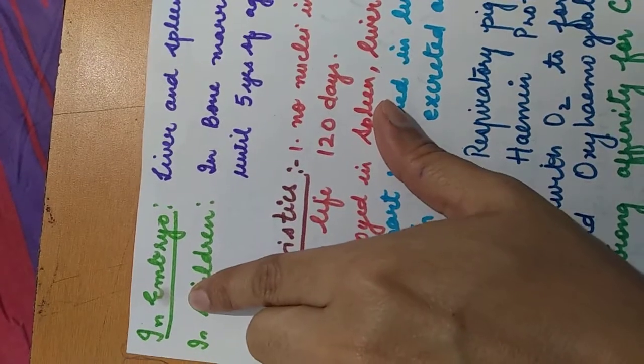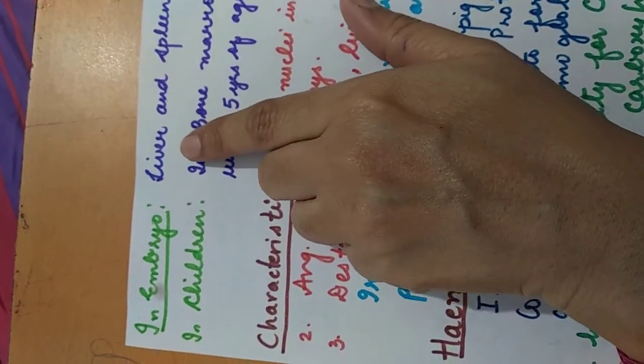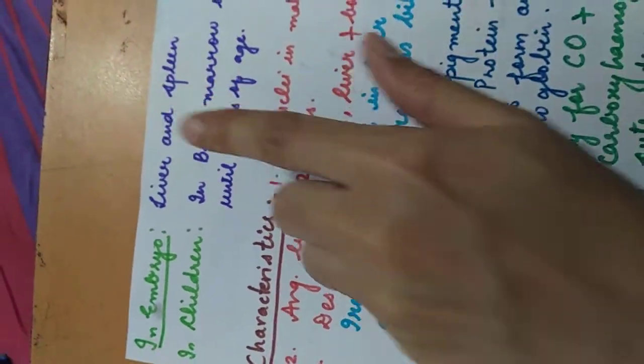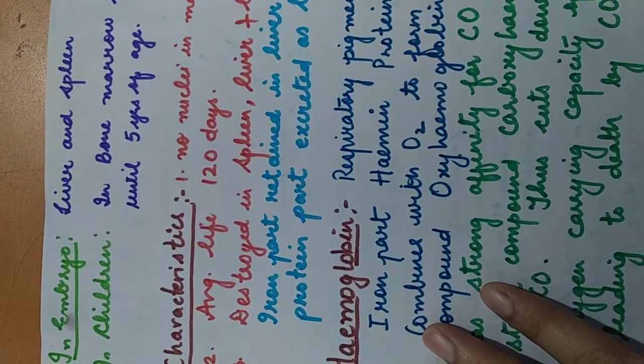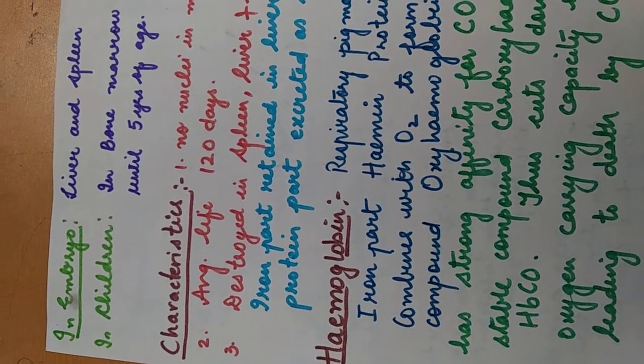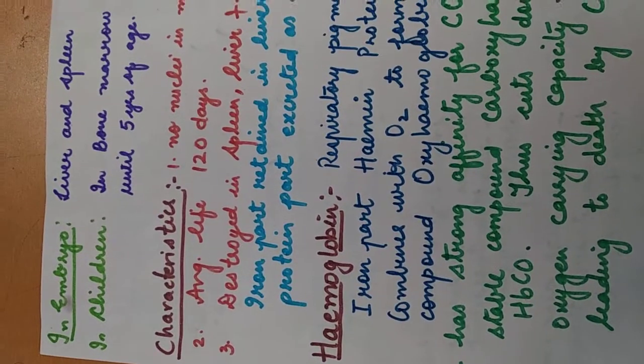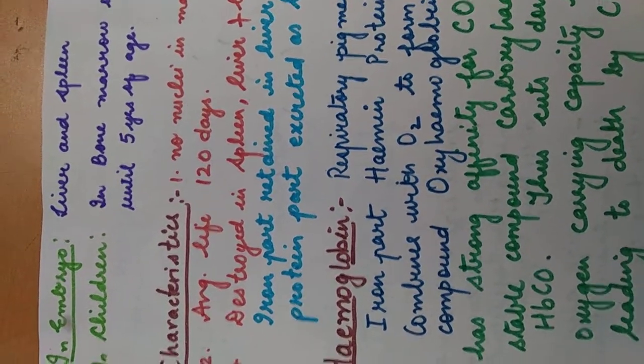Then if we talk about in embryo, where the production of these RBCs takes place? In embryo, liver and spleen, these are the two organs where the production of RBCs takes place. You have to learn it. You can have this question in your exam.